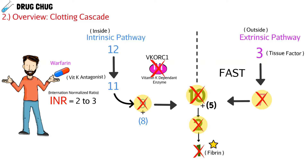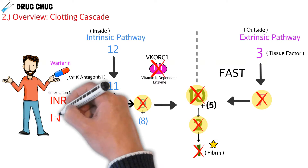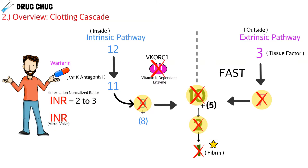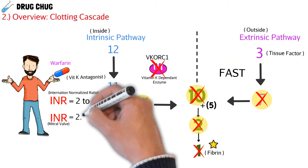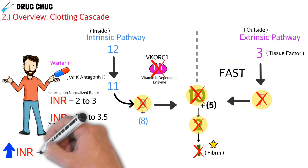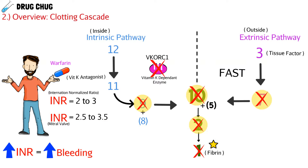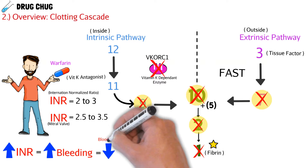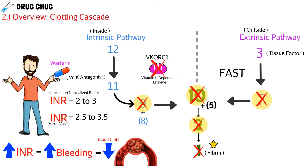The higher the INR, the more bleeding the patient essentially has, because they have fewer clotting factors. If a patient has an INR of 2, we could say their blood is twice as thin. Now if a patient has a mitral valve — a prosthetic valve in their heart — we have an even higher INR target: 2.5 to 3.5. The big picture is that a higher INR means more bleeding, thinner blood, and fewer blood clots.